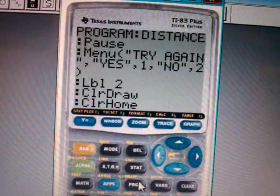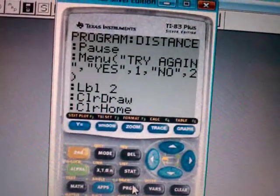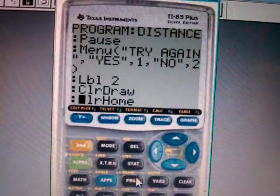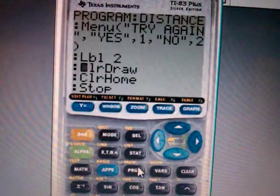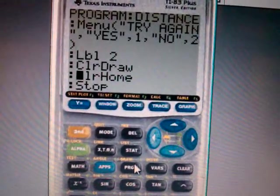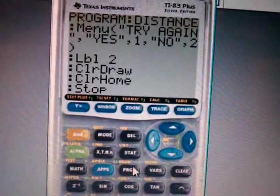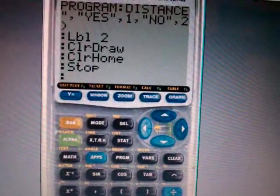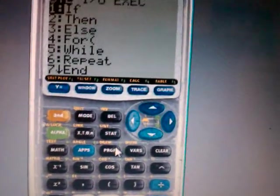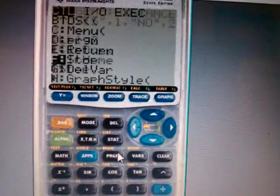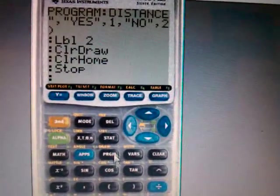Here's the label again. The label was Program, then number 9, and then Label 2. Clear Draw was second Program, hit enter. Clear Home was Program, you hit to the right once, number 8. And last not least is Stop, and that's just Program. I'm going to push up, and there is Stop. So that's the entire program.